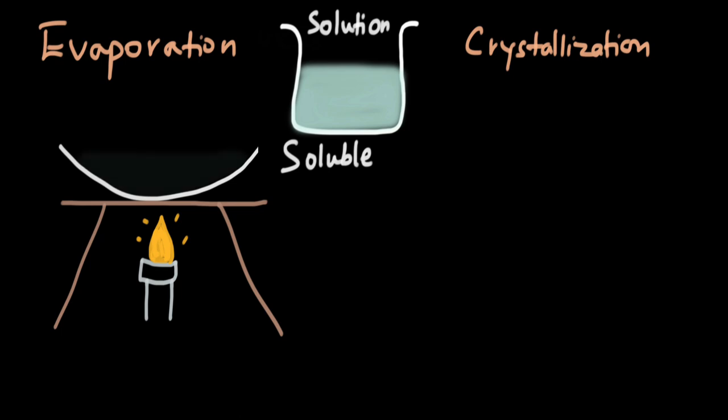You have this solution in the evaporating dish. When you start heating the solution, the water starts evaporating and turning into water vapor. When the entire water has evaporated, all that is left behind is the solute - the solid or salt in this case. Crystals of salt are obtained in the evaporating dish. That is how we can separate the dissolved solid from liquid.